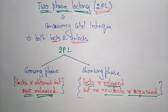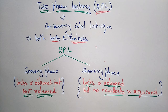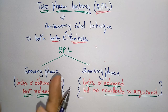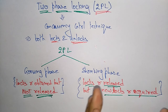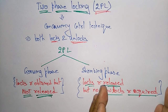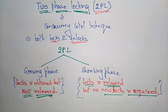So the main difference to note is: in the growing phase, locks are acquired; in the shrinking phase, no new locks are acquired and existing locks are released. That is the two-phase structure, which is why we call it two-phase locking.